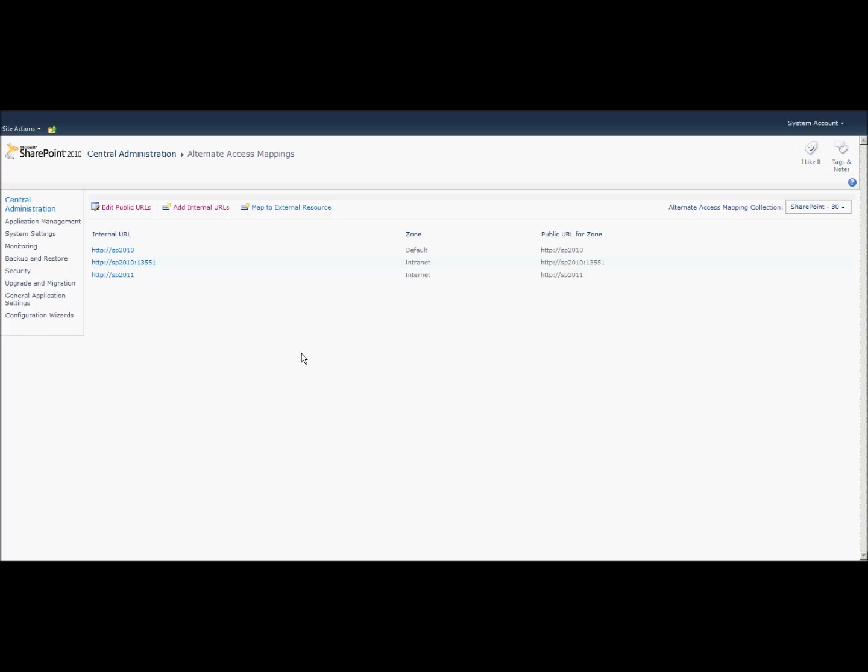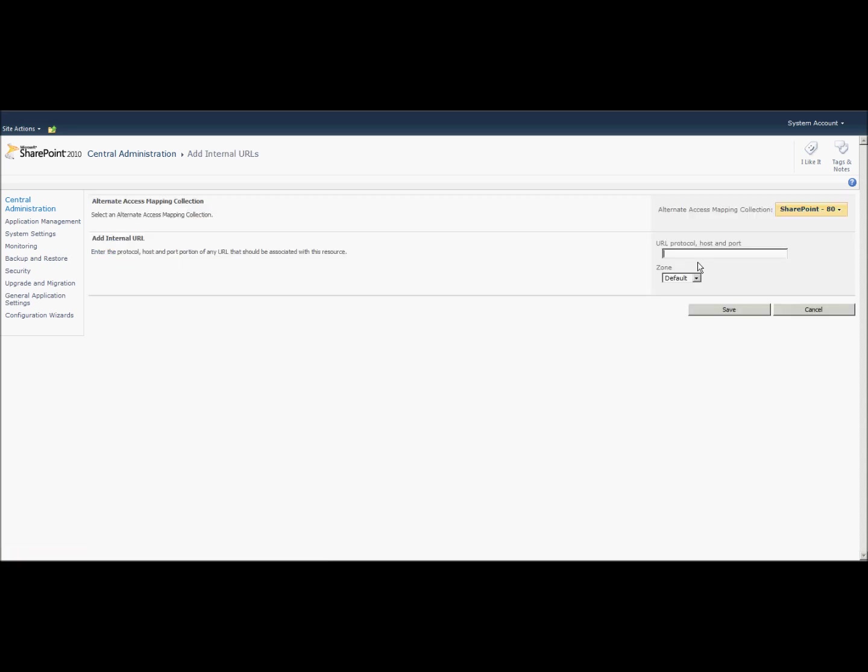Let's look at how that's configured in the SharePoint environment. You go ahead and click on Add Internal URL. I add in the internal URL, that is HTTP SP2010 Internal. And I can choose the zone for which I want to add the internal URL. In my case, I'm going to choose Default and then click on OK.